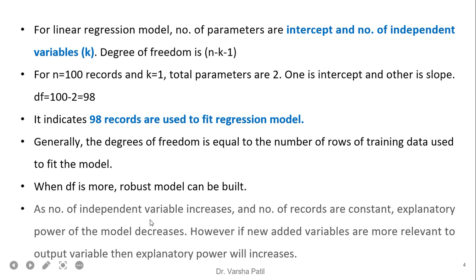As the number of independent variables increases and the number of records remains constant, the explanatory power of the model decreases. However, if a new variable is added and it is relevant to the output variable, then explanatory power will increase. So this is a very important observation: when we add independent variables in regression and keep the number of records constant, explanatory power decreases unless the added variable is significant.